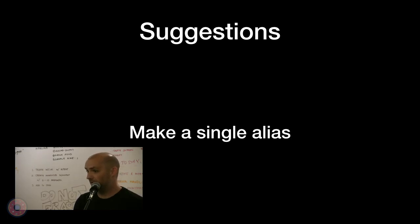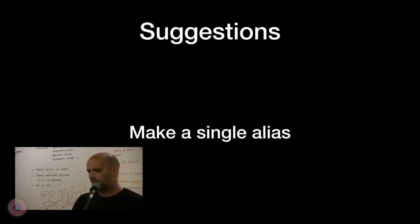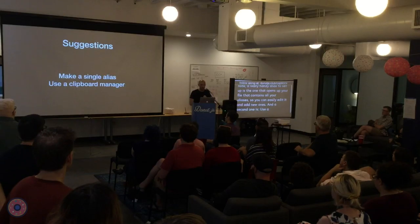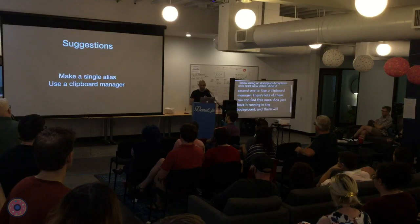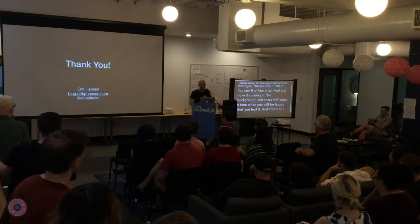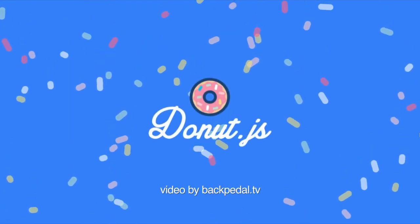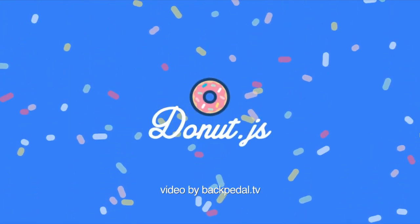A couple of suggestions and takeaways. If you're new to this, just make a single alias — you'll have to Google your shell to figure out how to do it. A really handy alias to set up is one that opens the file containing all your aliases so you can easily edit it and add new ones. The second takeaway: use a clipboard manager. Just find one — there are lots of them, including free ones. Have it running in the background, and there will come a time when you'll be happy that you had it. And that's all I had for you tonight — thank you so much.